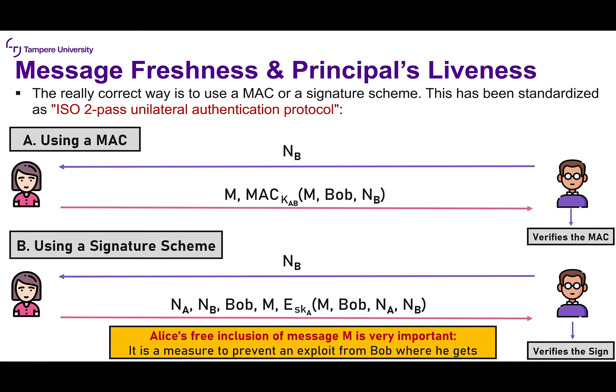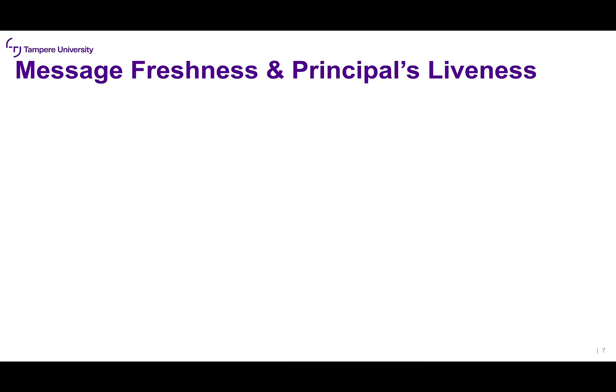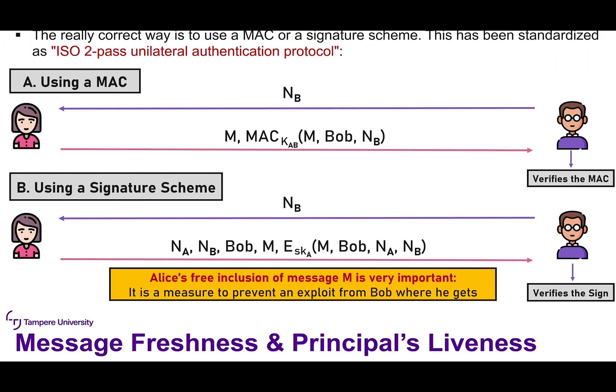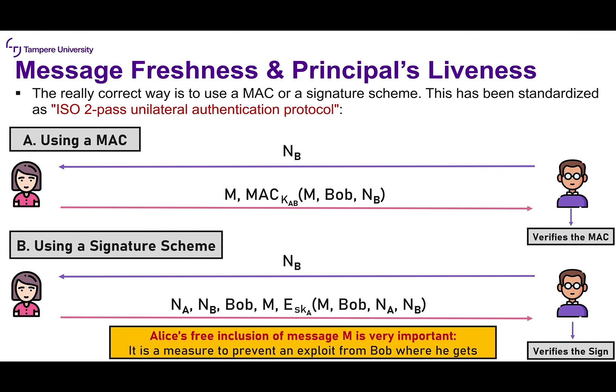Alice's free inclusion of message M is very important — it is a measure to prevent an exploit from Bob where he gets to sign things that he should not.